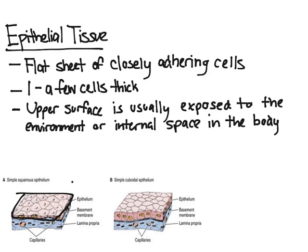As you can see, the upper part of this tissue essentially is a boundary. The upper layer will be either exposed to the environment, such as your skin, or exposed to an internal space in the body. For example, the lining of your heart, your organs, or your esophagus. Those are all epithelial tissue. Epithelial tissue also makes up most glands.